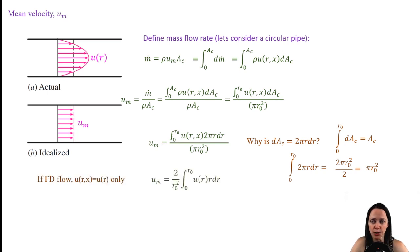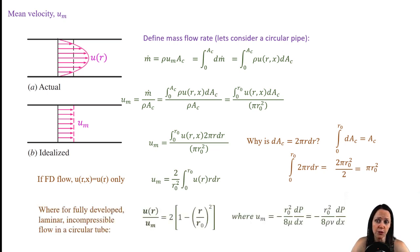Canceling out a few terms and only looking at the fully developed region, we have an expression for the average or the mean velocity. You can get an expression for the velocity profile as a function of r for fully developed laminar, incompressible flow in a circular tube by applying the conservation of momentum. Now we'll skip the derivation here, but do note that if we take the maximum velocity to be at r equals 0, we can see that the maximum velocity for fully developed laminar pipe flow is twice that of the average velocity.